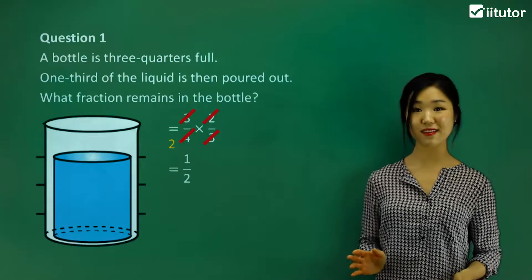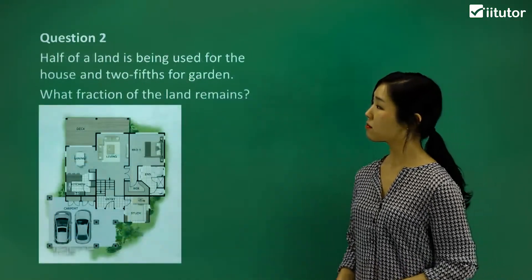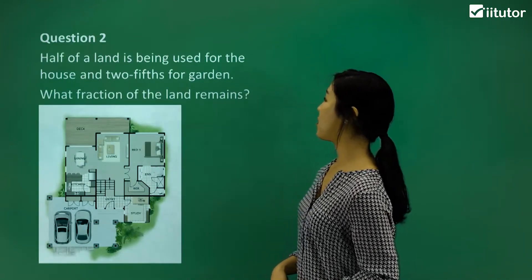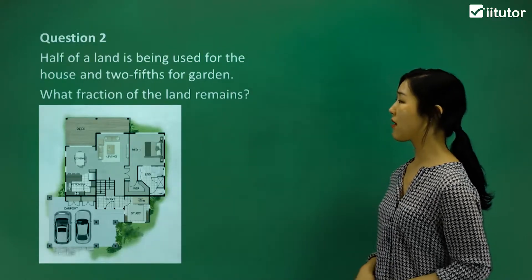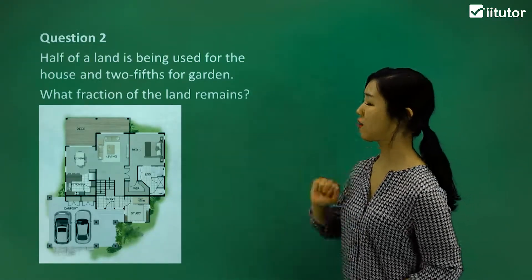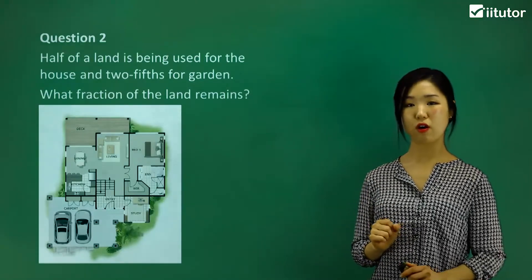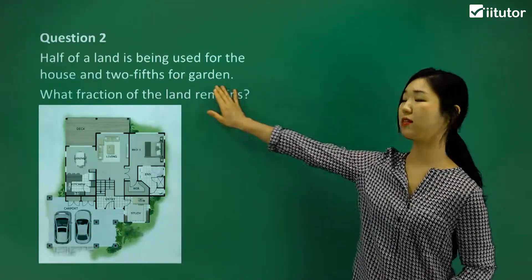Makes sense? Let's go on. Let's try question two. Half of a land is being used for the house, and two-fifths for the garden. What fraction of the land remains? We are taking out two types of land: one part for the house, and one part for the garden.